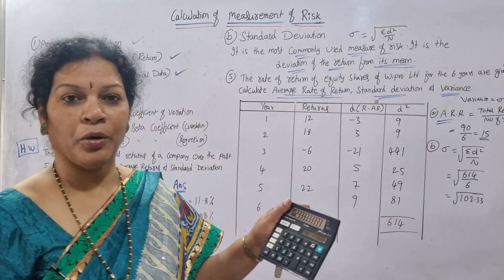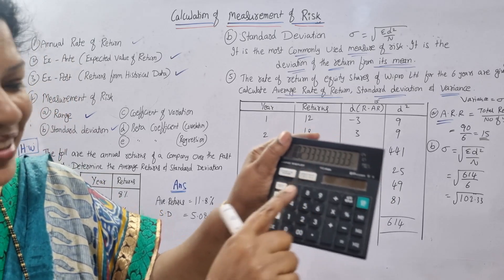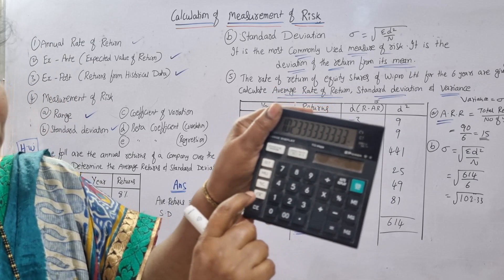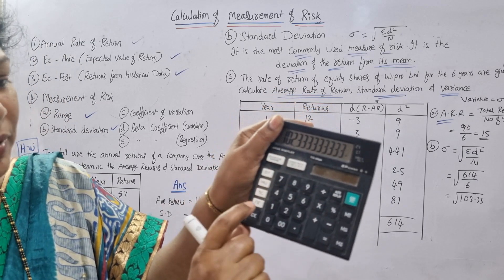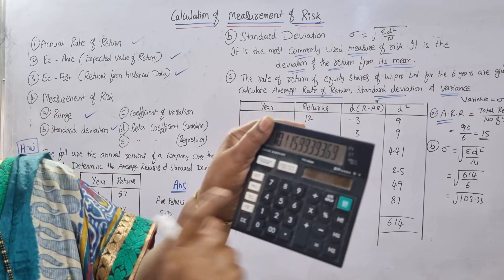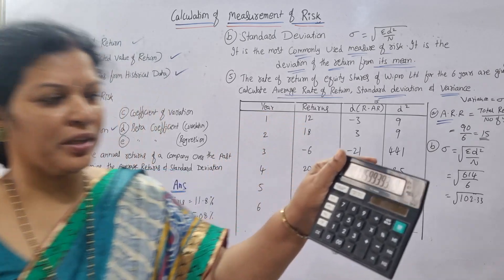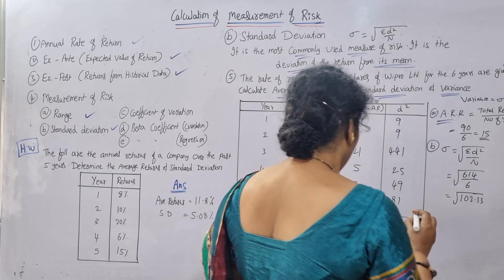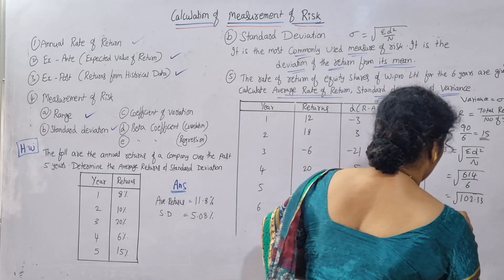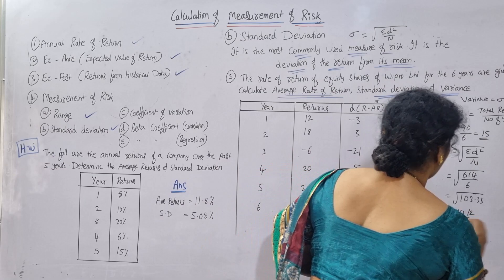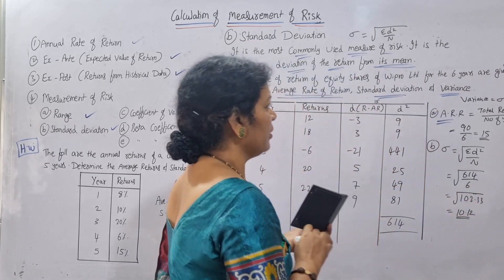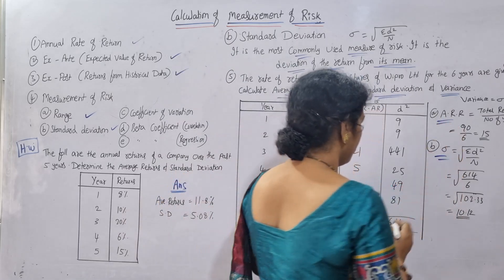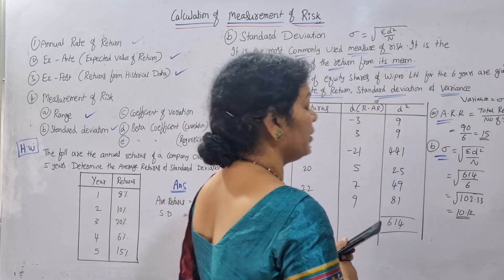Many people ask how to take the root — in a calculator, write the amount and press root. Removing the root of 102.33, you get 10.116, which we round to 10.12. So the standard deviation is 10.12.